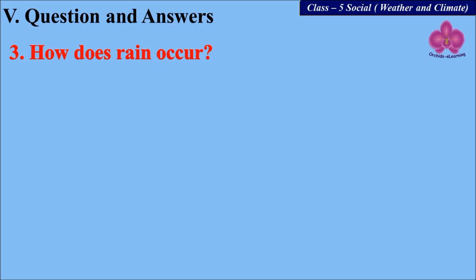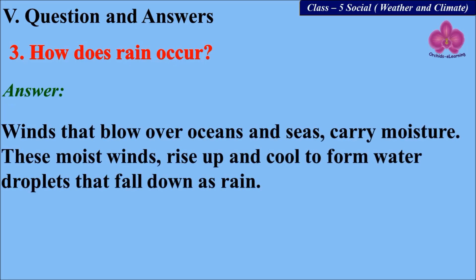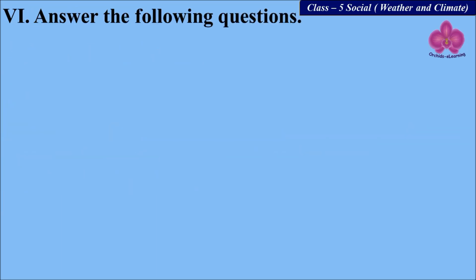Third: how does rain occur? Winds that blow over oceans and seas carry moisture. These moist winds rise up and cool to form water droplets that fall down as rain.